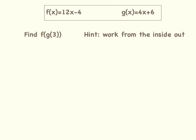It's going to look something like this: g(3) = 4 times 3 plus 6. Now we can start to simplify that. 4 times 3 is 12, so we have 12 plus 6, and we know that 12 plus 6 is 18.